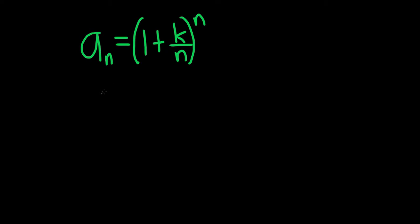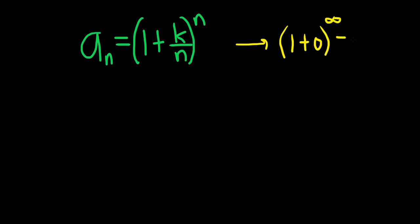In this problem we have to determine if the sequence converges or diverges, and if it converges we have to find the limit. This will converge — this is a special sequence, that's how I know it converges. If you let n go to infinity you'll notice that you get something like 1 plus 0 to the infinity, so you end up with 1 to the infinity, which is an indeterminate form.